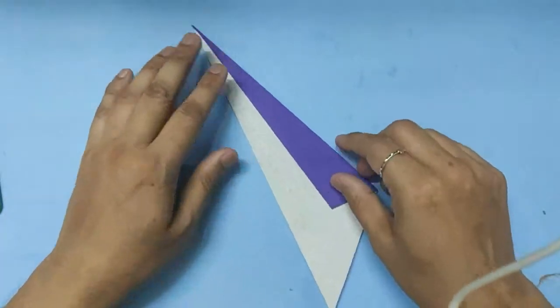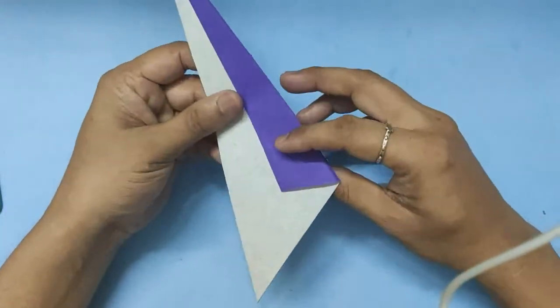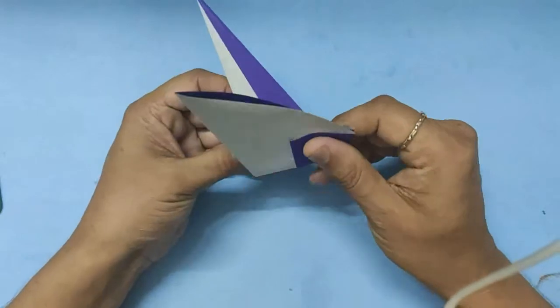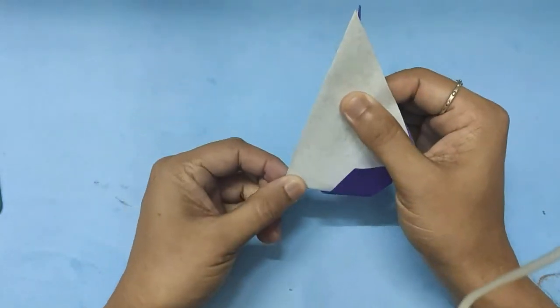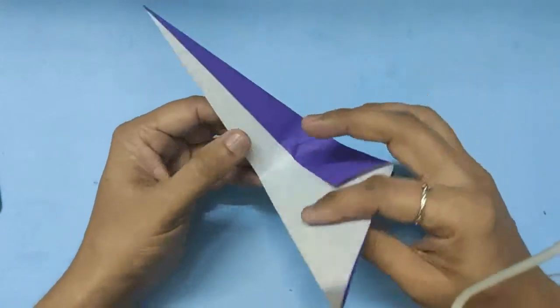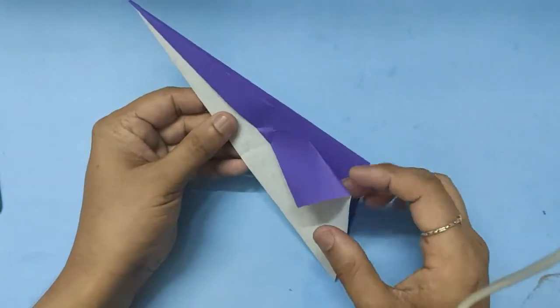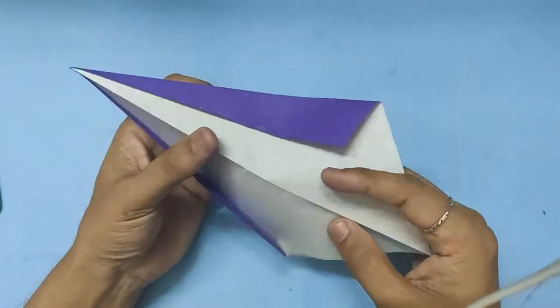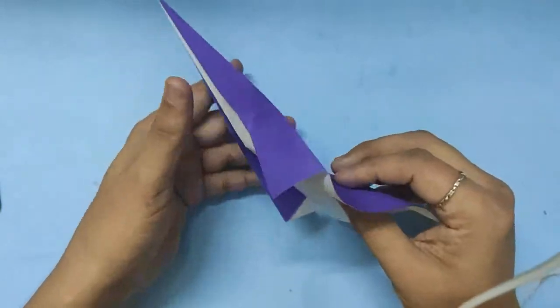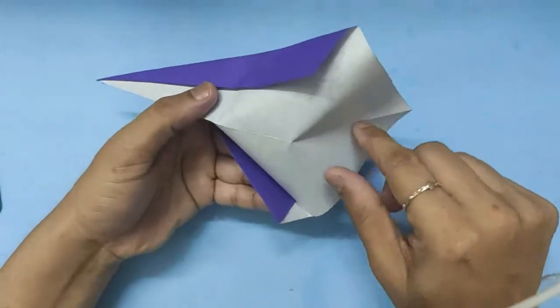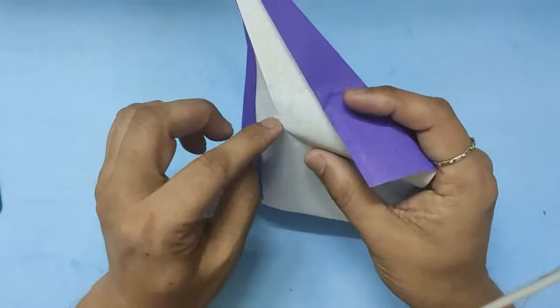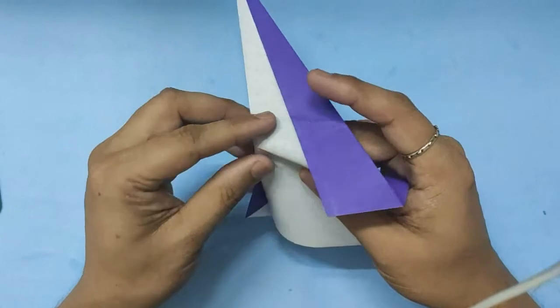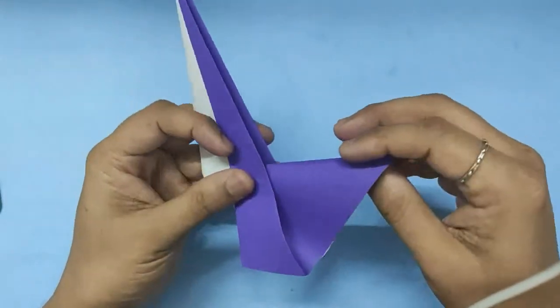We will now find the midpoint by bringing the two corners together. So that pinch is the midpoint. From there, we will fold it backward. Push that back from the pinch mark and you will form an L.